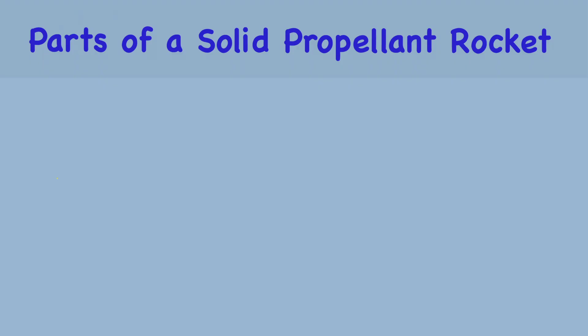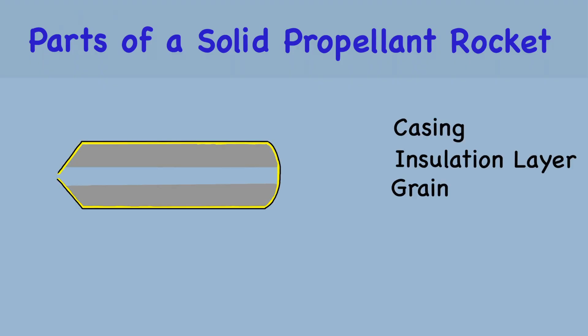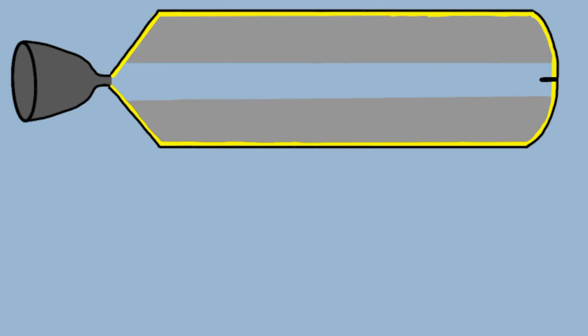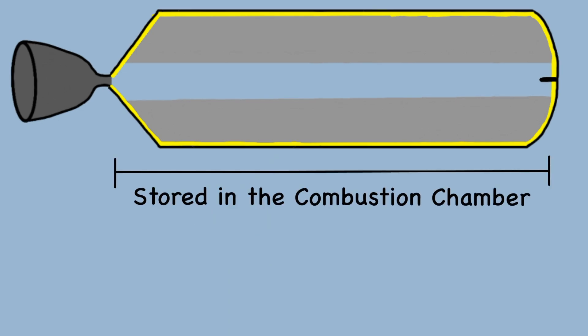These are the parts of a solid propellant rocket. In this case, the fuel and oxidizer are mixed and stored in a solid state called grain. The grain is stored in the combustion chamber, which is elongated.